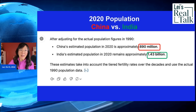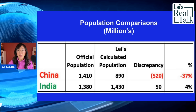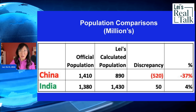Comparing these to official announced populations, we have a problem. China's official population is 1.4 billion. In my comparison, India's calculated figure is within a 4% margin of error — a discrepancy of 50 million. But for China, the official number is 520 million higher than my estimated number — that's 37%. China's real population, based on official fertility rates and the official 1990 starting population, should be 890 million, not 1.41 billion.